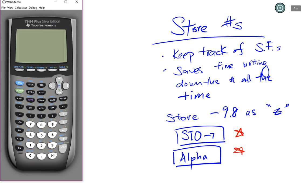I'm going to show you how to use that, and also some of the other benefits that you can use your graphing calculator for as well. How to store numbers: let's say I'm going to store negative 9.8 as a number. So I'm going to type in negative 9.8.